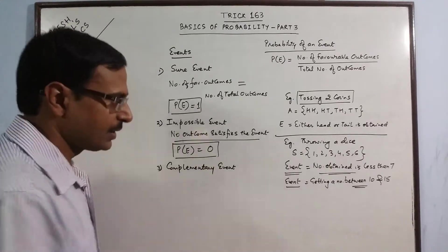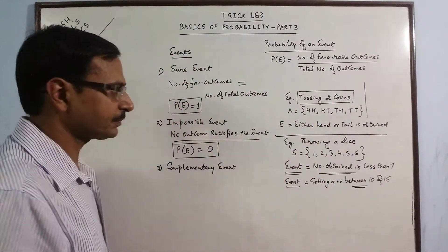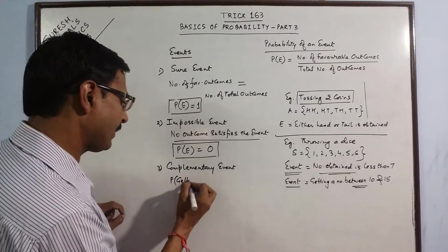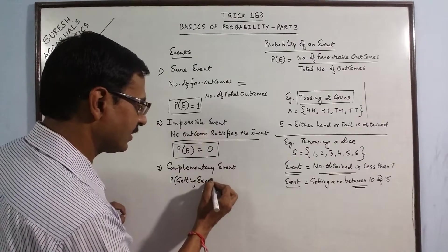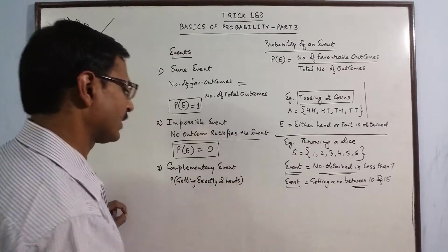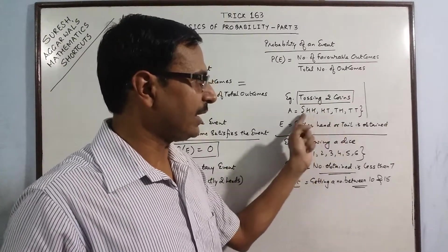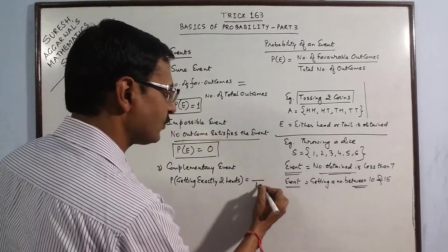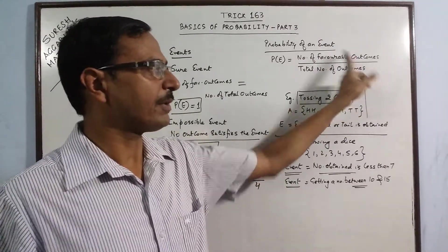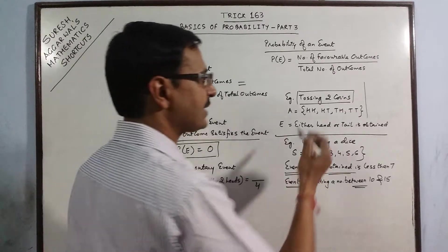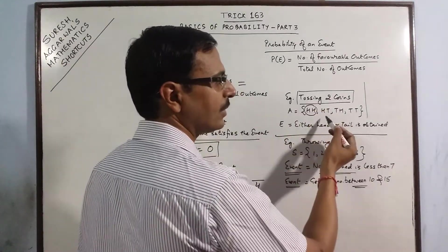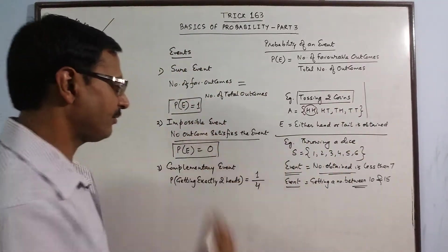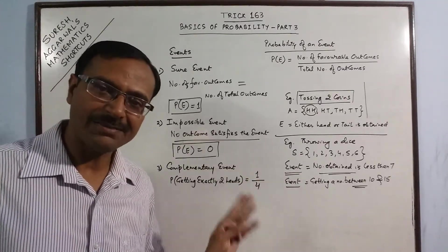Now, the complementary event. Take the example of tossing 2 coins. I have one event: getting exactly 2 heads. In this example, I have 4 outcomes in the sample space, so the total number of outcomes is 4. Getting exactly 2 heads occurs in only one case; the other cases have a single head or no head. So only one case is favorable, and the probability is 1 upon 4.